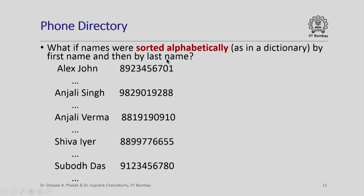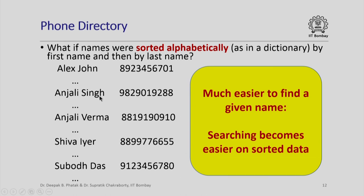One could ask: what if the names were sorted alphabetically, as in a dictionary, first by first name and then by last name? So Alex would appear before Anjali because L appears before N; Anjali Singh would appear before Anjali Verma because S appears before V in the last name. If the names were sorted alphabetically, finding a given name becomes much easier — we can navigate first by first name, then by last name. Sorting the data on an appropriate criterion makes searching significantly easier.